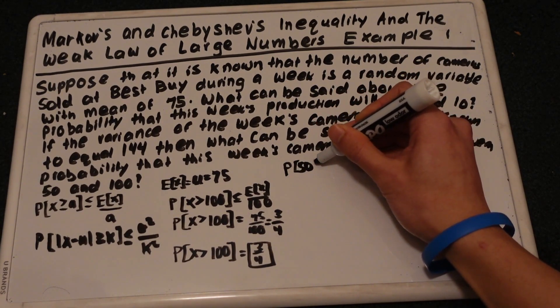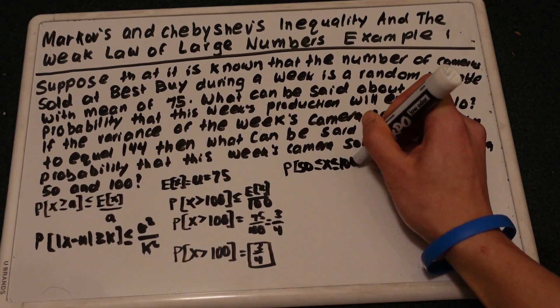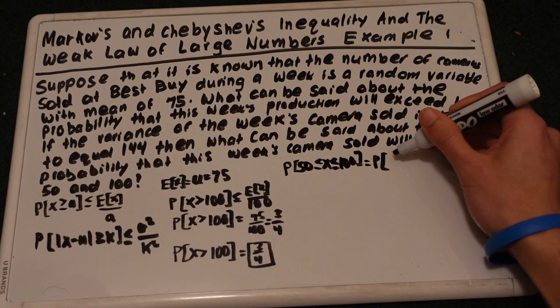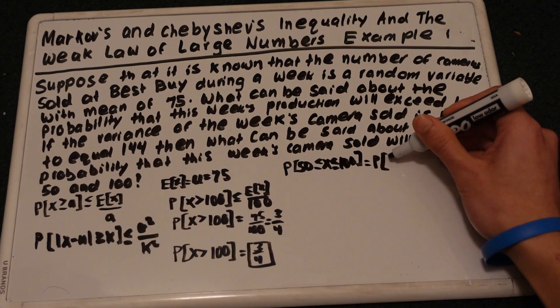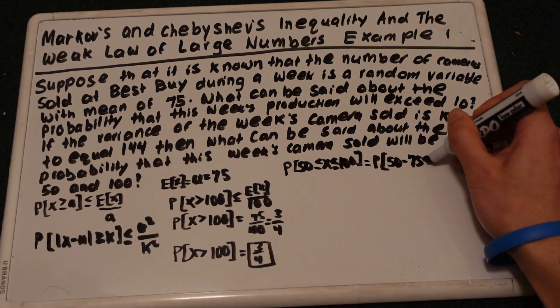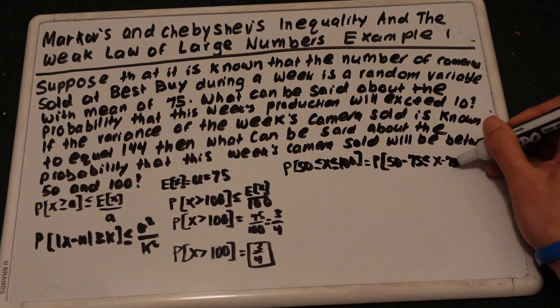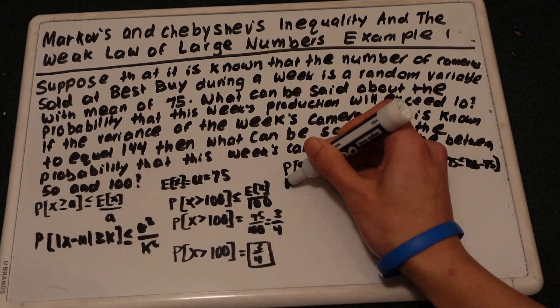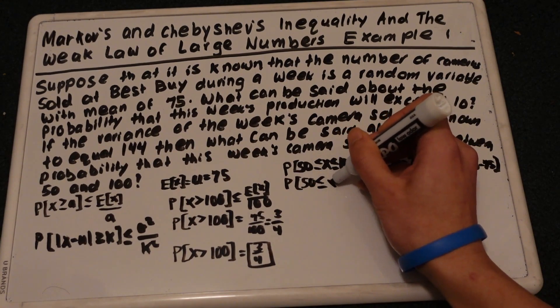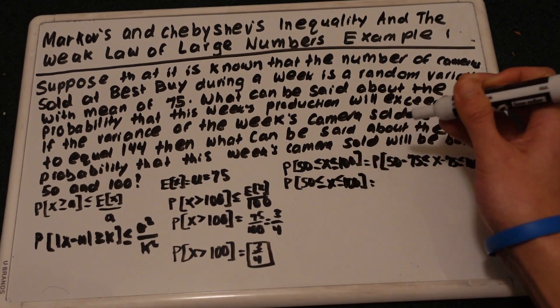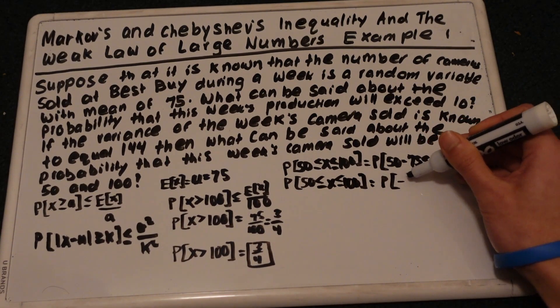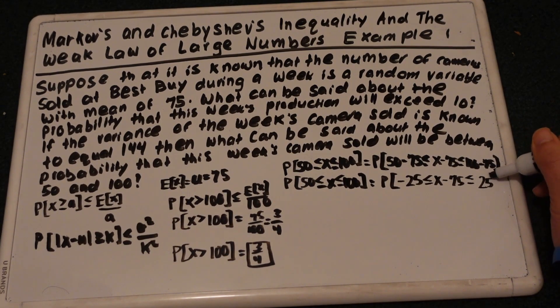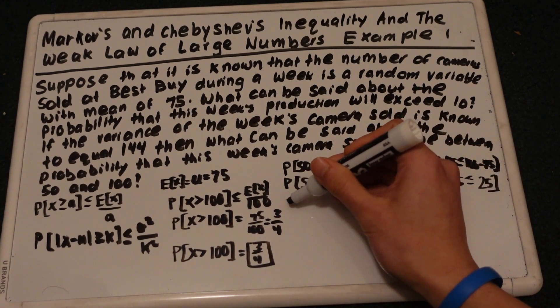So it's between 50 and 100. You can subtract 75 from both sides. So it would be negative 25. And we can see...